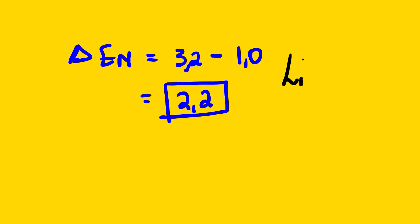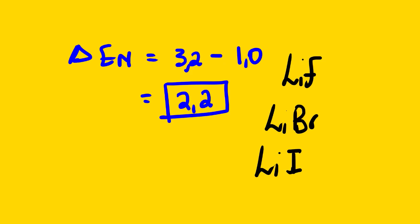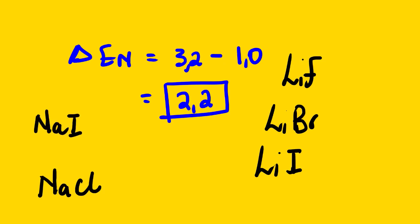We have many examples of ionic bonding that you can verify: lithium fluoride, lithium bromide, lithium iodide, sodium chloride, sodium iodide, potassium bromide, and potassium iodide. You can check these examples using the EN difference to confirm whether they are ionic bonds or not.